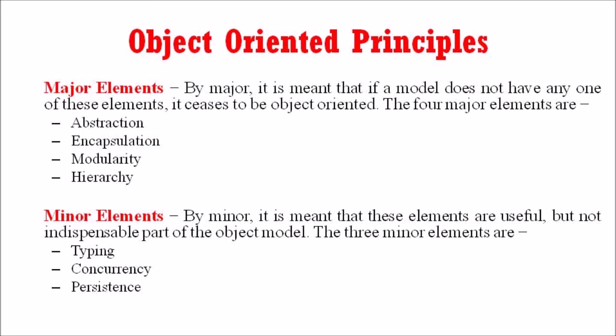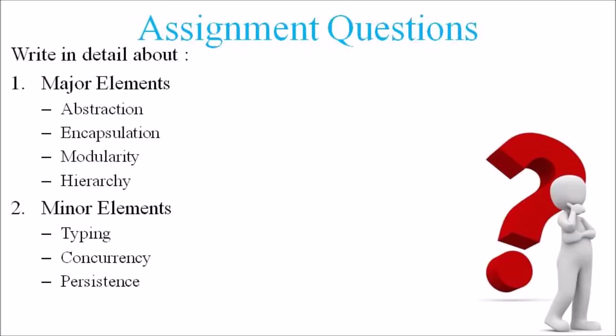As we discussed, the categories include major elements and minor elements. Hope you have understood this topic. Kindly go through this assignment question. First, write in detail about the major elements in object orientation — that is, abstraction, encapsulation, modularity, and hierarchy. Second, write about the minor elements — that is, typing, concurrency, and persistence.